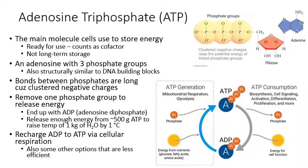A lot of enzymes need ATP as a source of energy in order to catalyze the reactions they need to catalyze. ATP is the main molecule that cells use to store energy for immediate use. If they want to store energy for a longer period of time, they would use a different molecule — maybe fat or glycogen. But when looking to have energy in a ready-to-use format, they're going to use ATP in most cases.